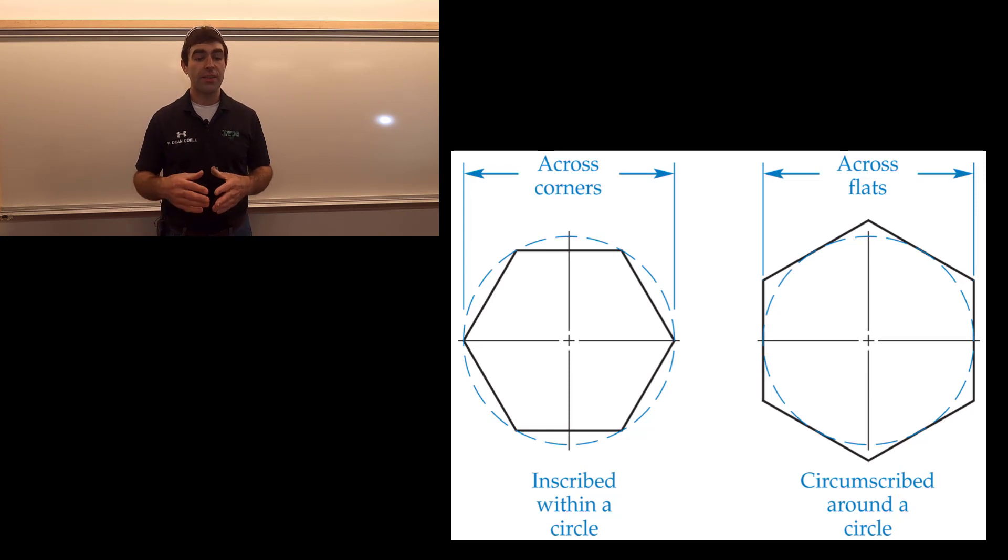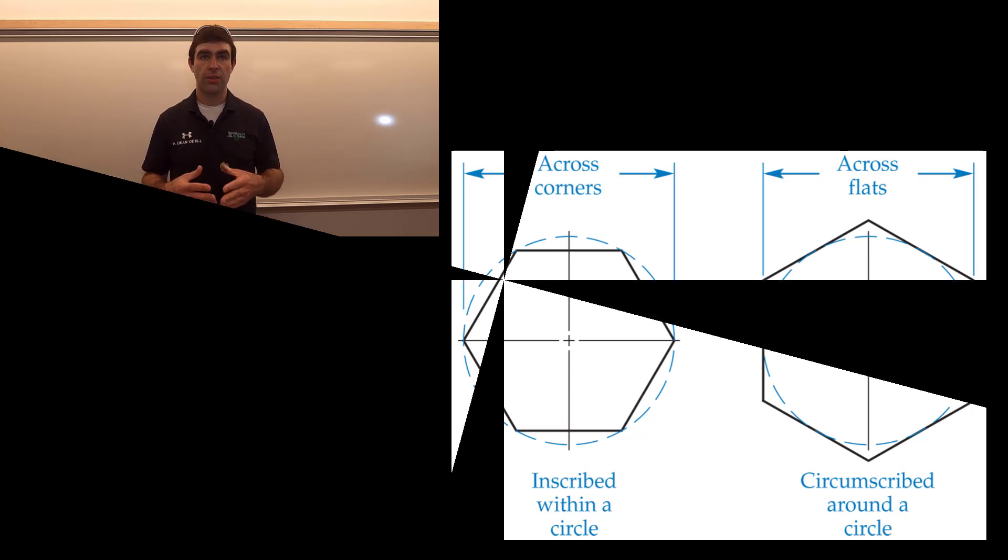The other kind is the inscribed. With an inscribed polygon, the polygon is totally within the circle and only the outside edges are touching the circle.